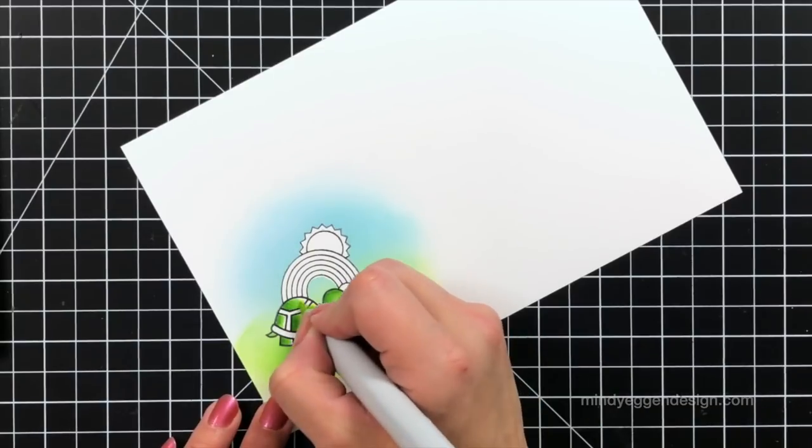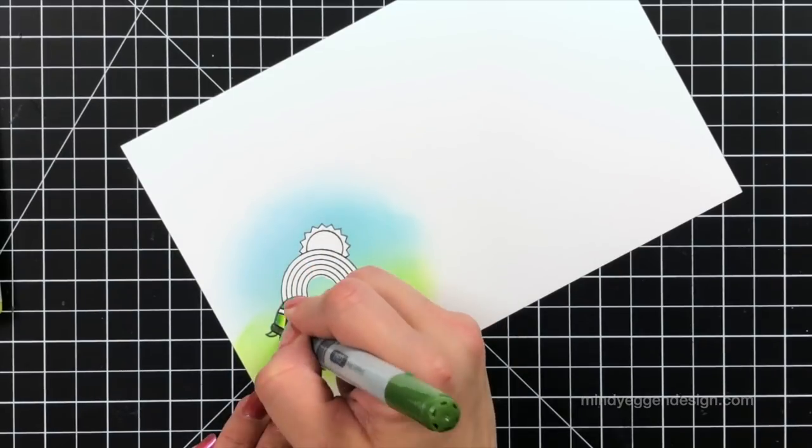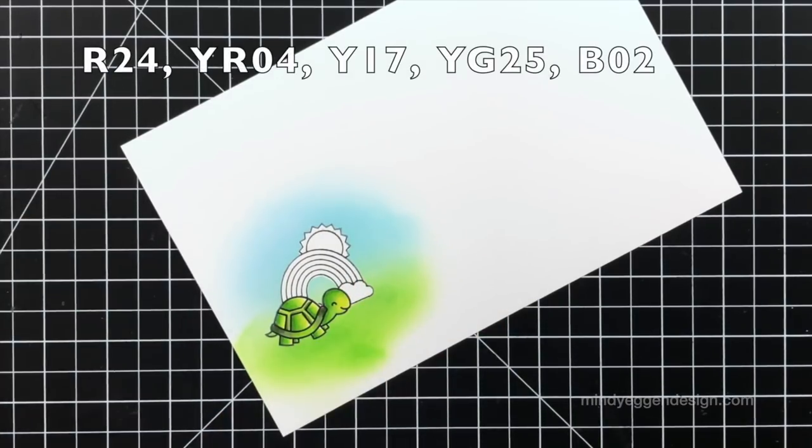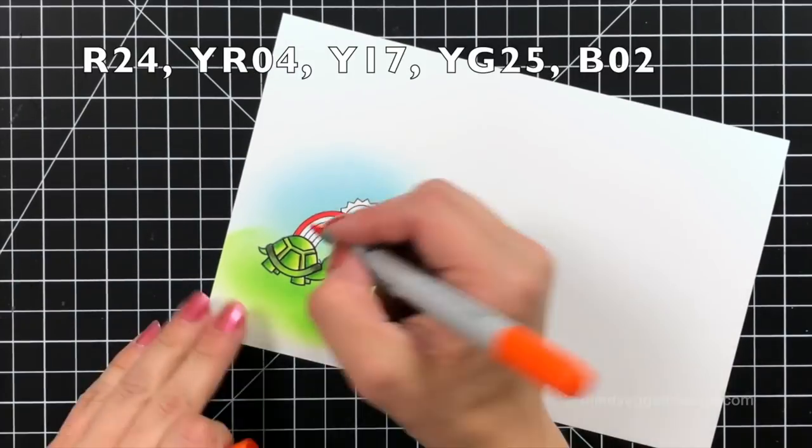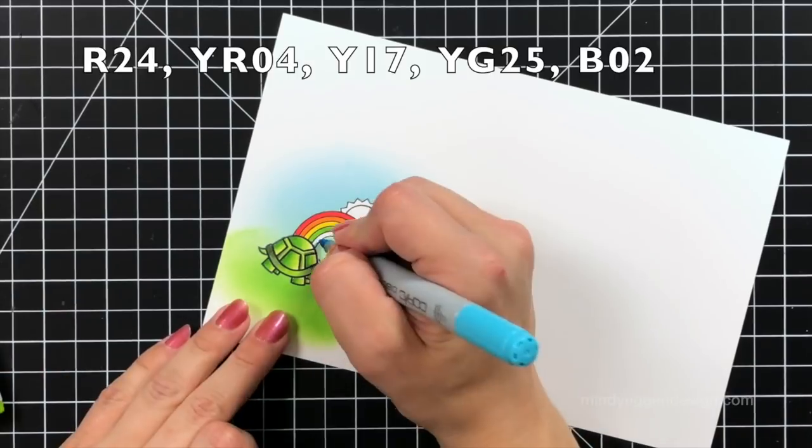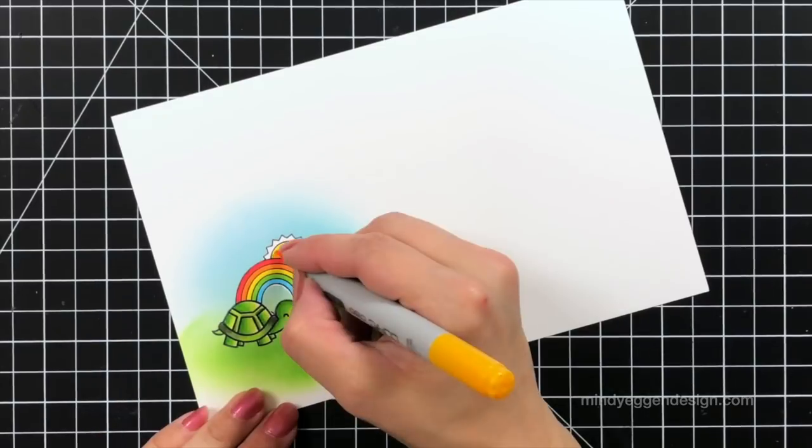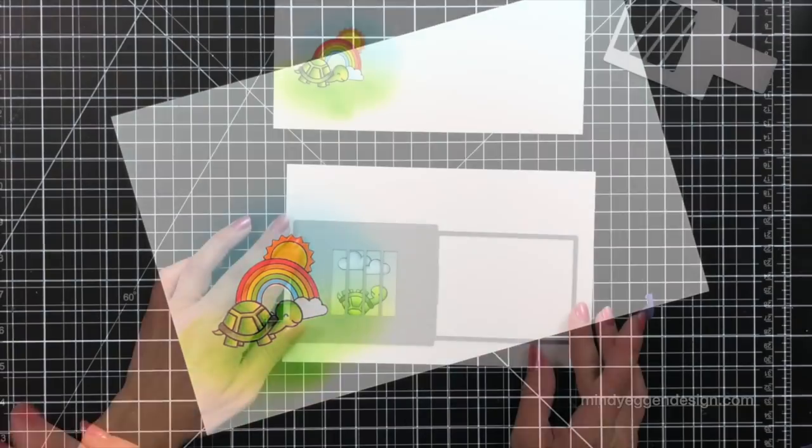For my rainbow, I didn't do any shading. I just added straight color to the rainbow. I kept that really simple. You could add some shading if you wanted to. For my rainbow, I'm going to use R24 for the red, YR04 for my orange, Y17 for the yellow, YG25 for the green, and B02 for the blue. Just straight coloring, nothing fancy. For the sun, I did come back in and use that same yellow and orange that I had in the rainbow. No shading there either. Just straight color.